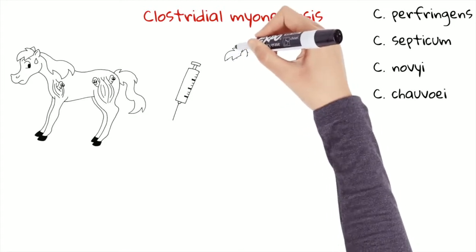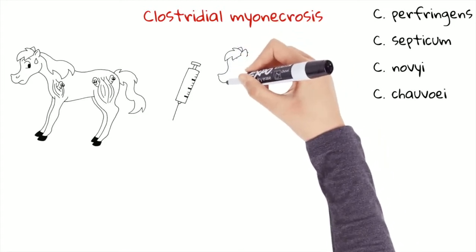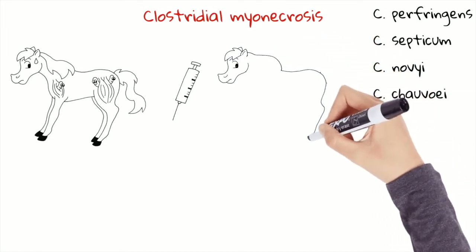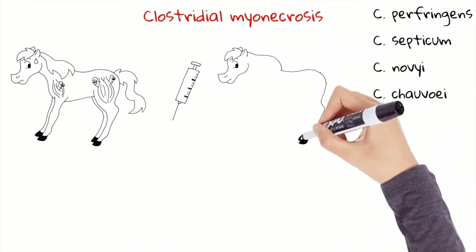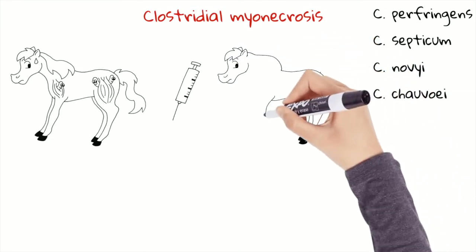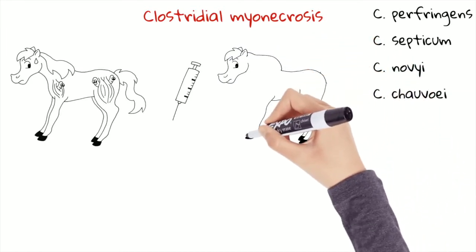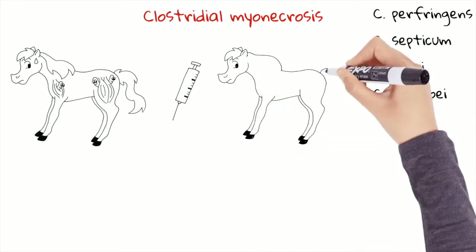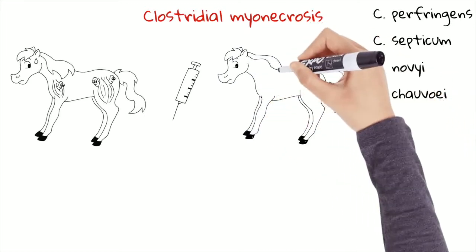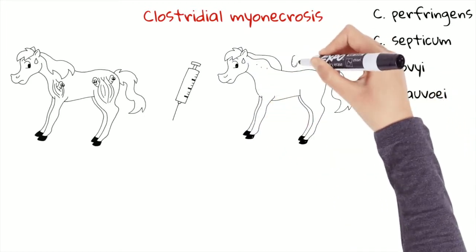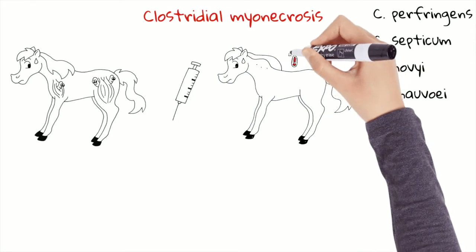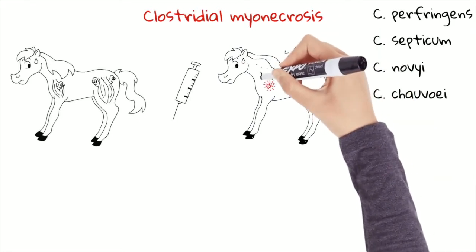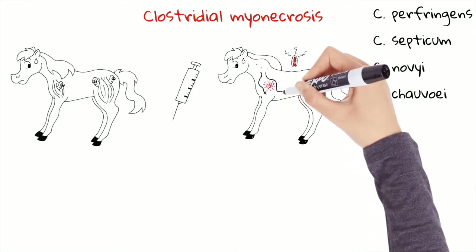Initially, there is a small reaction on the site of injection or of the trauma, but in approximately 48 hours there is emphysema formation — that is a swelling with crackles or crepitus on palpation. Furthermore, the animal shows fever, tachycardia, and tachypnea.